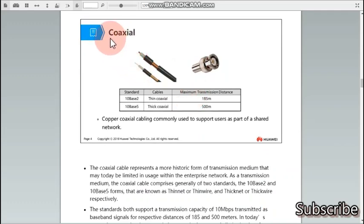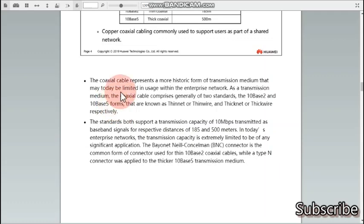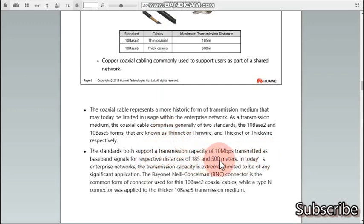The first medium we will talk about is coaxial cable. There are different types of coaxial cables. You can see here standards 10base2 and 10base5. Both are coaxial cables but the difference is this one is thin coaxial cable and the transmission distance they can cover is 185 meters and 500 meters respectively. Copper coaxial cabling is commonly used to support users as part of a shared network. Coaxial cable represents a more historic form of transmission medium that may today be limited in usage with enterprise networks. The speed of these standards support a transmission capacity of 10 Mbps transmitted as baseband signals for the respective distances of 185 meters and 500 meters.